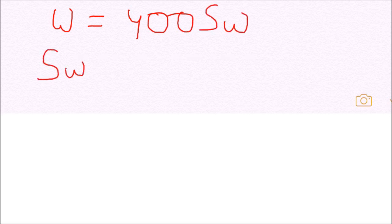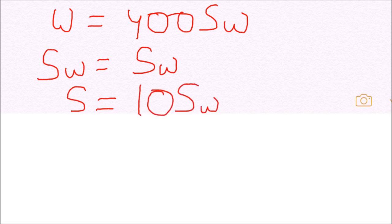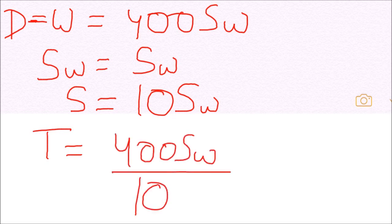The total work is 400 times SW and the speed of women we know is SW. The question asks in how many days will 10 women do the same total work. So the net effective speed becomes 10 times speed of women, that is 10 SW. So the time becomes distance upon speed, that is 400 SW by 10 SW, that is 40 days.